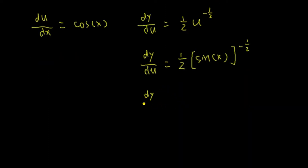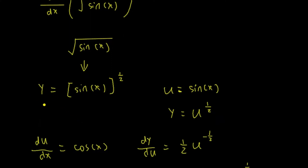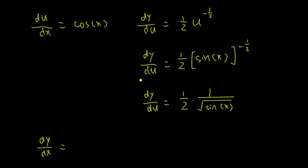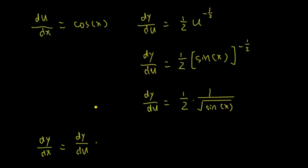That's the same as 1 half times 1 over square root of sin. Now, to differentiate square root of sin, we are differentiating sin to the power of 1 half. What we are looking for is dy/dx — differentiating y with respect to x.